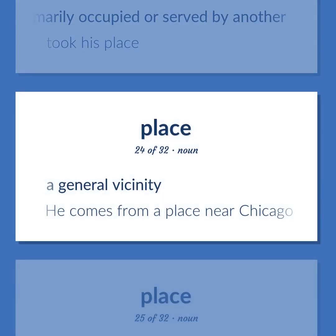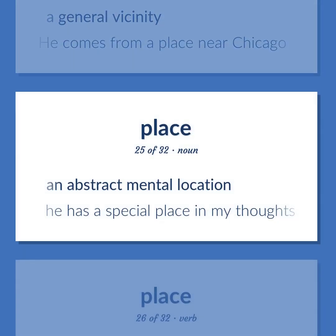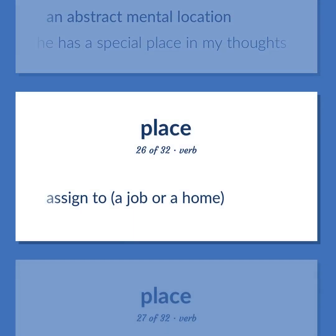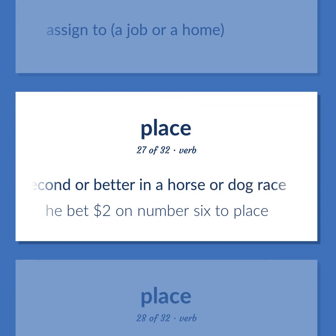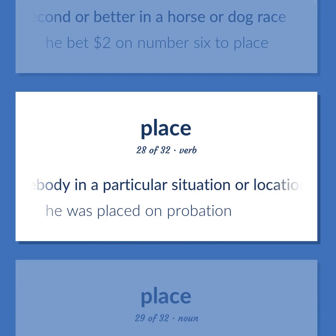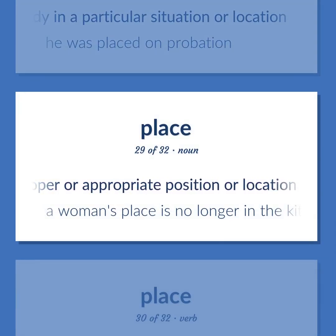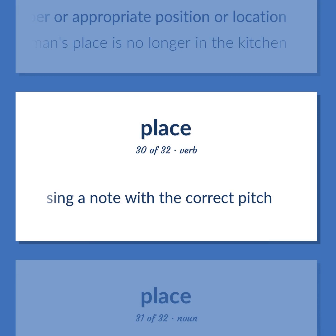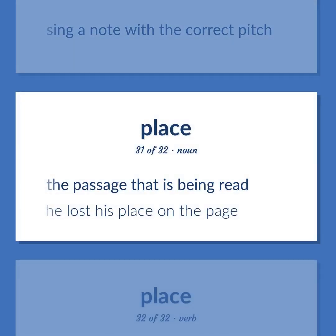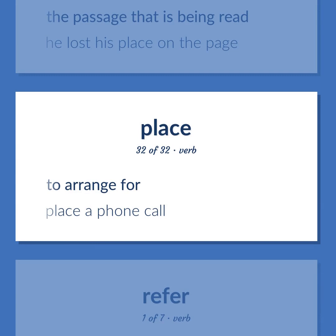Place: A general vicinity — 'He comes from a place near Chicago.' An abstract mental location — 'He has a special place in my thoughts.' Assigned to a job or a home. Finish second or better in a horse or dog race — 'He bet $2 on number 6 to place.' Place somebody in a particular situation or location — 'He was placed on probation.' Proper or appropriate position or location — 'A woman's place is no longer in the kitchen.' Sing a note with the correct pitch. The passage that is being read — 'He lost his place on the page.' To arrange for — 'Place a phone call.'